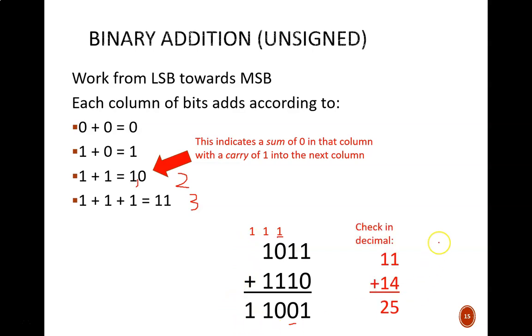It is always a good idea to check our work by converting each component to decimal. The augend is 8 plus 2 plus 1, or 11. The addend is 8 plus 4 plus 2, or 14. The sum is 16 plus 8 plus 1, or 25. And sure enough, it all checks out.